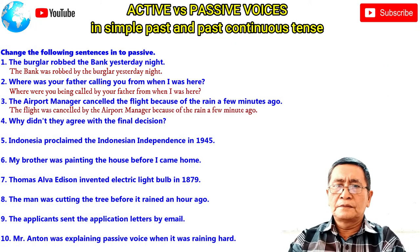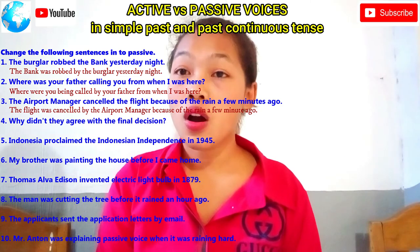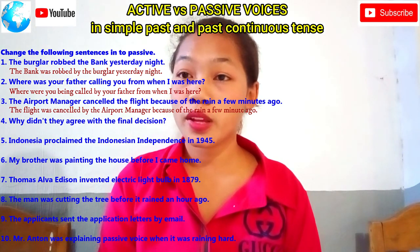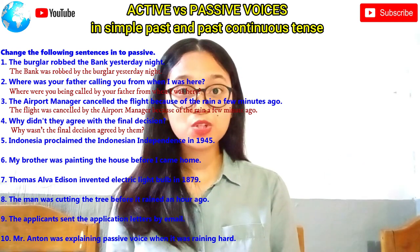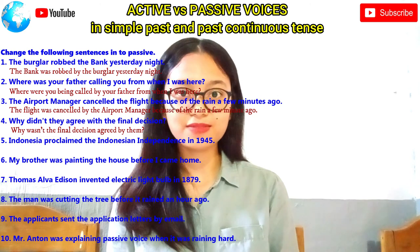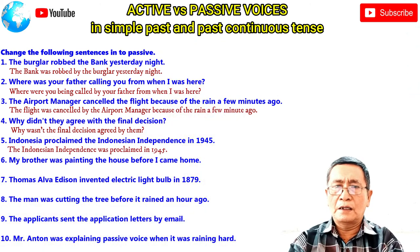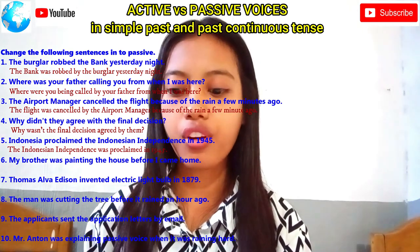Number four: 'Why did they agree with the final decision?' — Answer: 'Why wasn't the final decision agreed by them?' All right, good answer. Number five: 'Indonesia proclaimed the Indonesian independence in 1945.' Good answer. Number six: 'My brother was painting the house before I came home.' — Angi answers: 'The house was being painted by my brother before I came home.' All right, thank you very much, good answer.